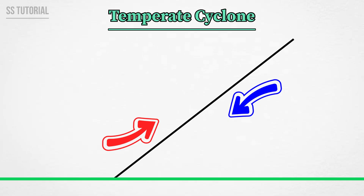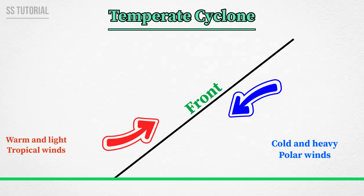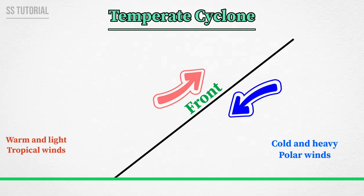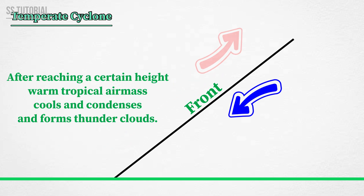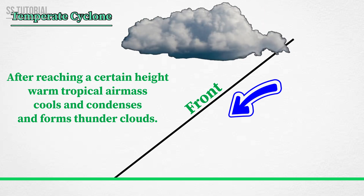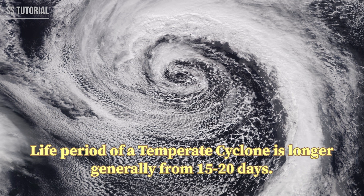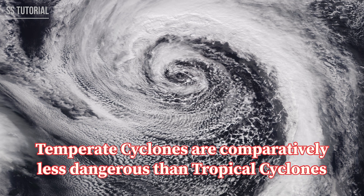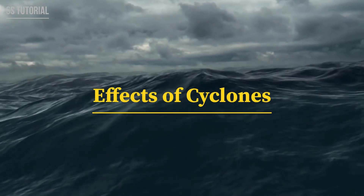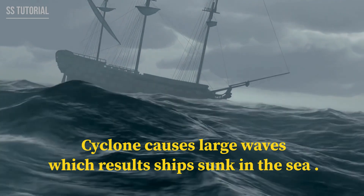Temperate cyclones form when two different air masses — one warm and light tropical air mass and the other cold and heavy polar air mass — mix together in the temperate region over land or ocean. A front forms between these two air masses, and the light warm tropical air mass rises upward along the front, condenses at a certain height, and forms thunder clouds, resulting in a temperate cyclone. Temperate cyclones last longer, generally from 15 to 20 days, and are comparatively less dangerous than tropical cyclones.